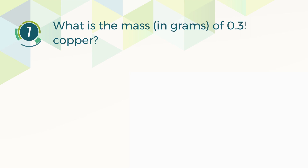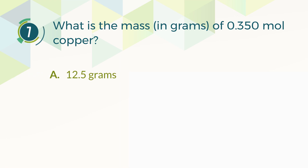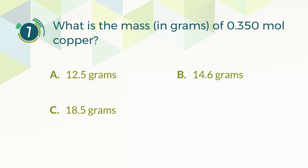Number 7. What is the mass, in grams, of 0.350 moles of copper? A. 12.5 grams. B. 14.6 grams. C. 18.5 grams. D. 22.2 grams.